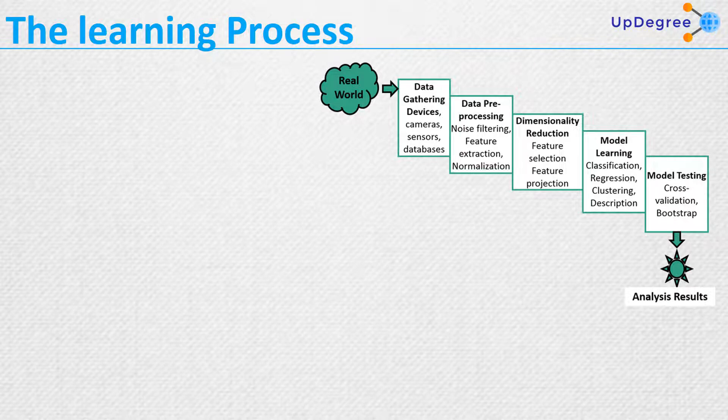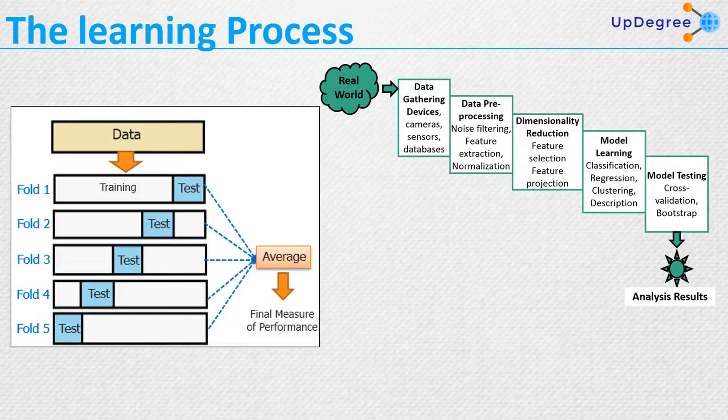Next we have cross-validation and bootstrap — this phase is known as model testing. So far we have five phases: data gathering, data pre-processing, dimensionality reduction, model learning, and now model testing. We will discuss two techniques: cross-validation and bootstrap.